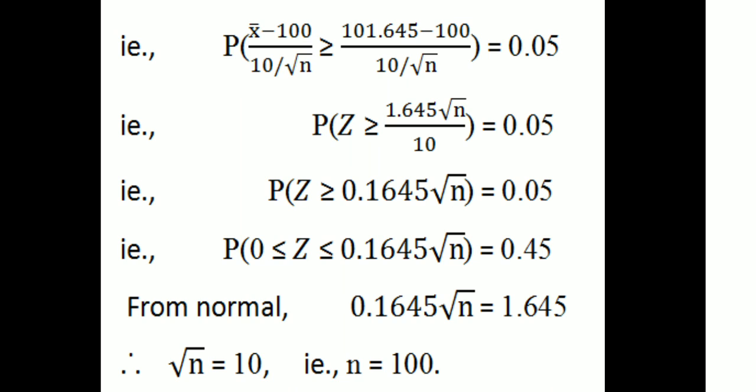This equals z₀.₀₅. That is, probability of Z greater than or equal to 1.645 × √n / 10 equal to 0.05. From the standard normal table, probability of Z greater than or equal to 1.645 × √n/10 is equal to 0.05.